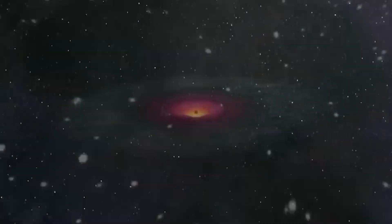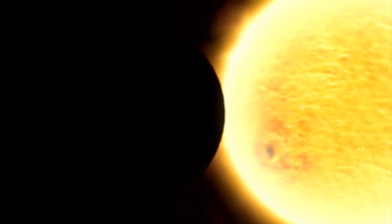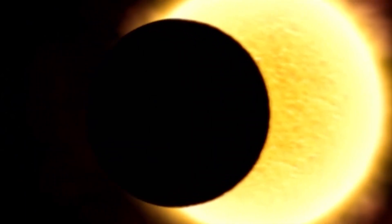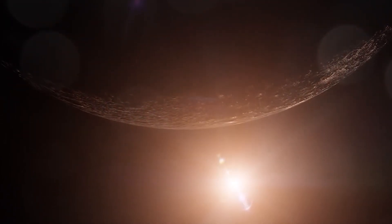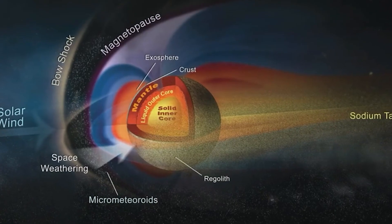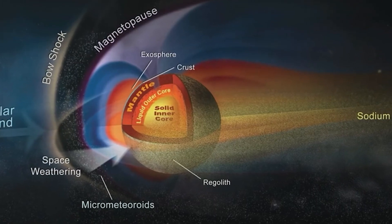The origins and implications of Mercury's magnetic field are subjects of ongoing scientific research and debate. One theory suggests that the planet's magnetic field may be a remnant of a more significant field that existed in the past but has since weakened over billions of years. Another possibility is that the magnetic field is generated by complex interactions between its partially molten core and the solid outer layer.